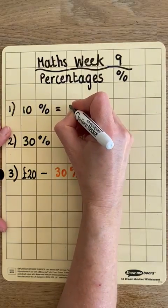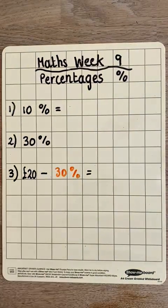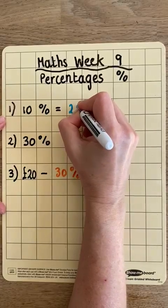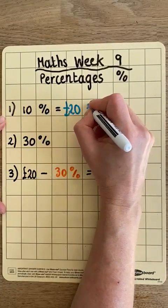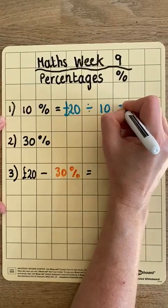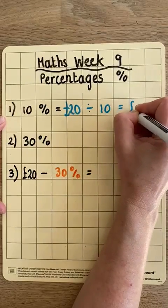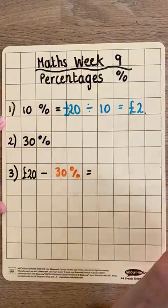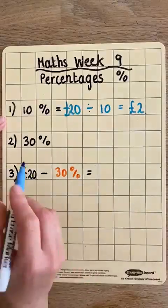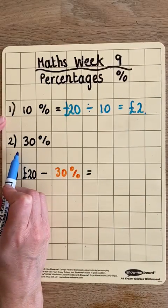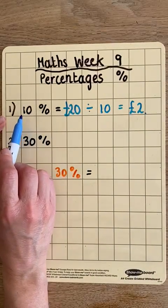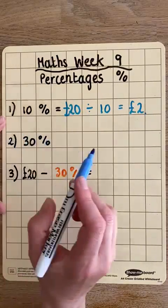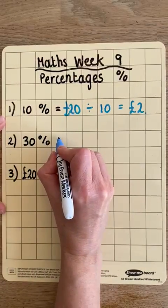We're told that the top costs 20 pounds, so we take 20 pounds and divide that by 10, which gives us 2 pounds.